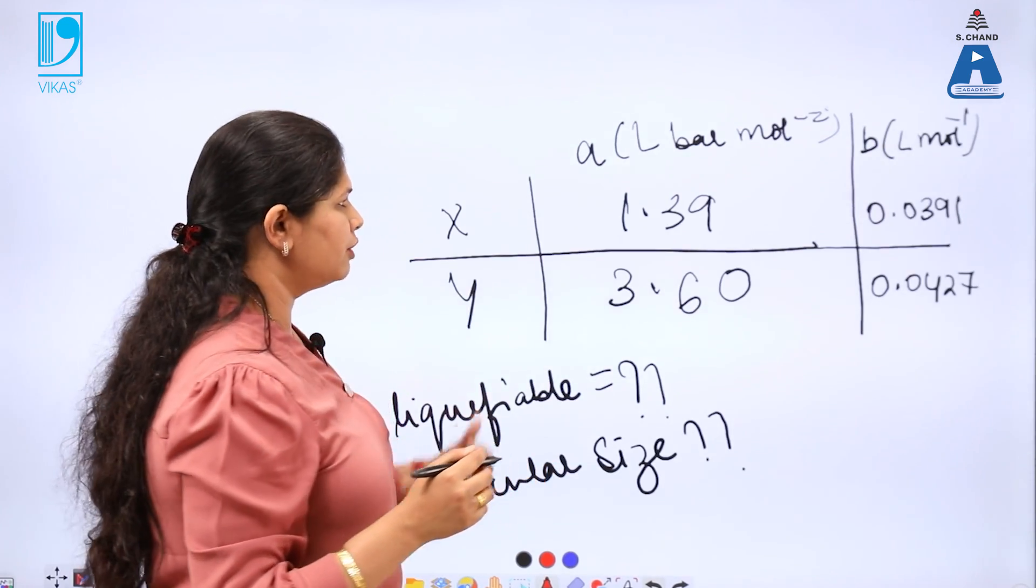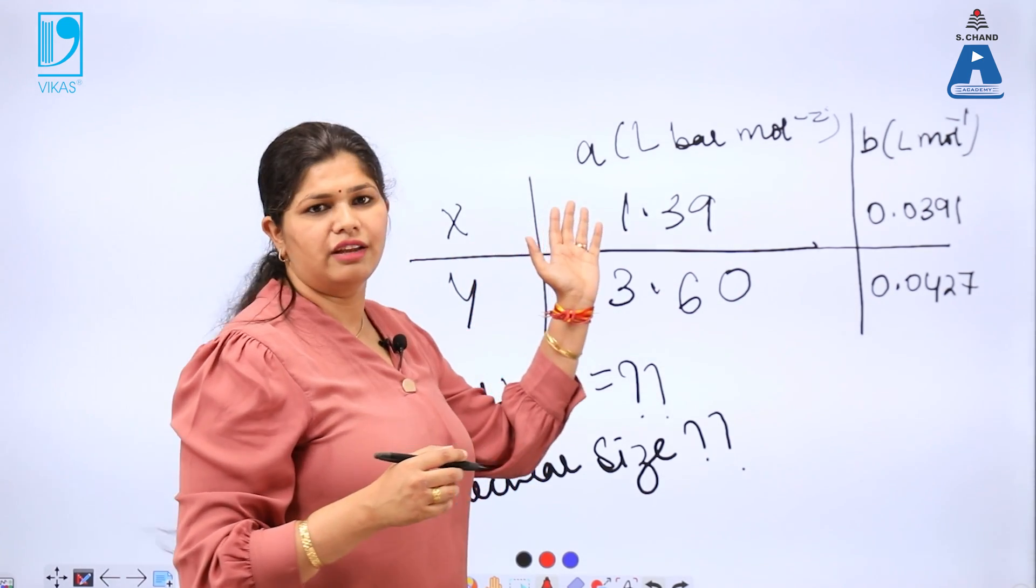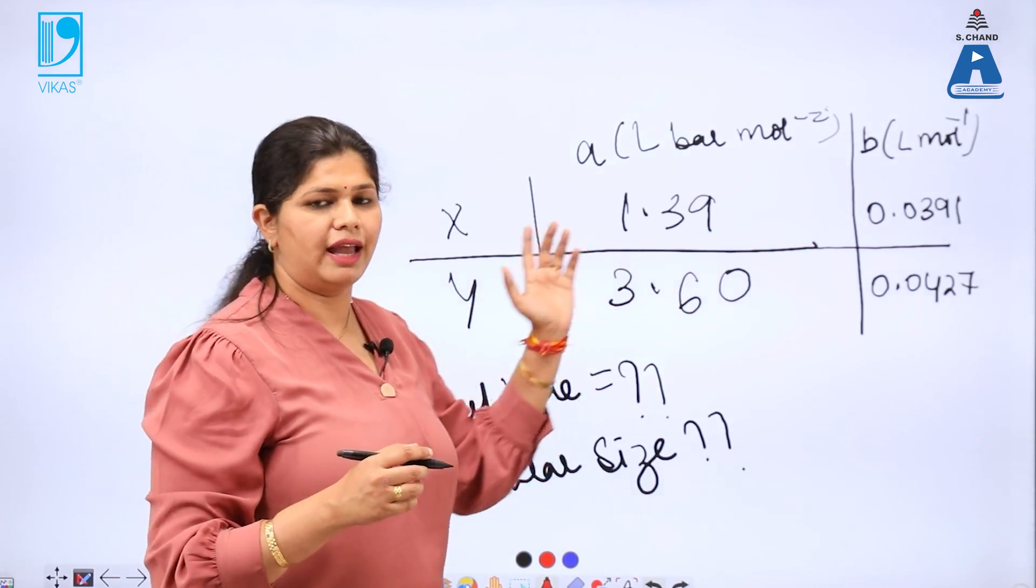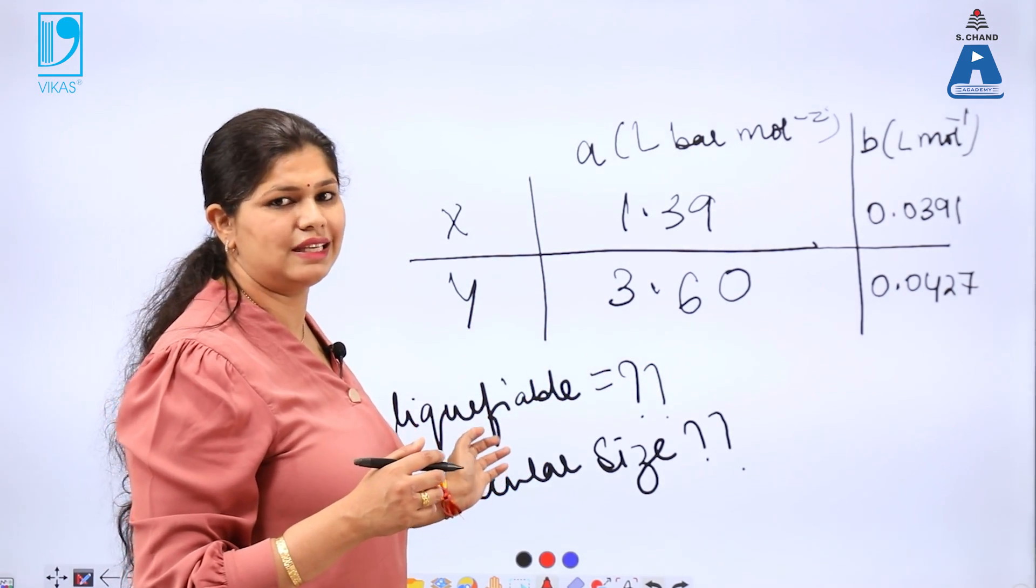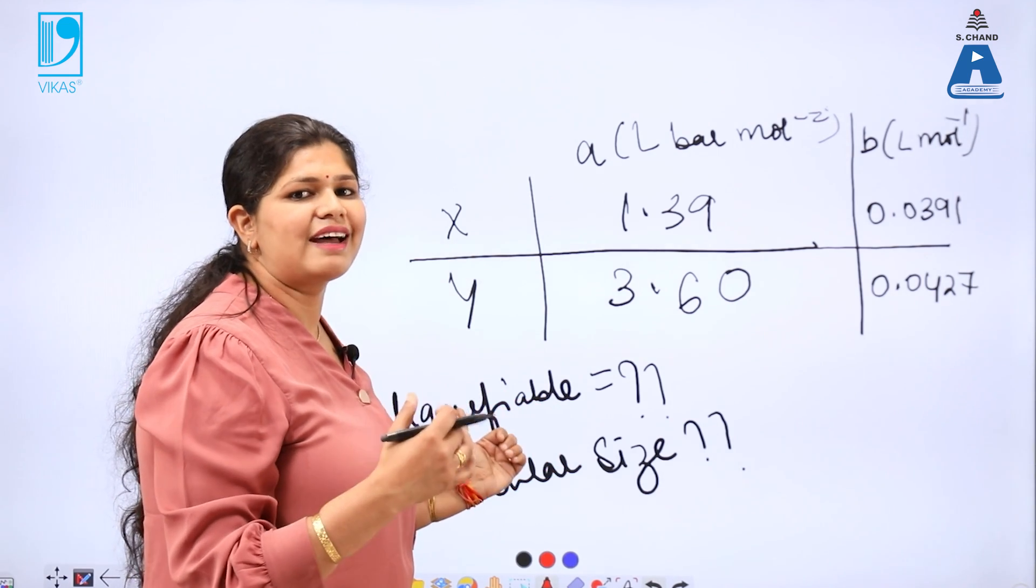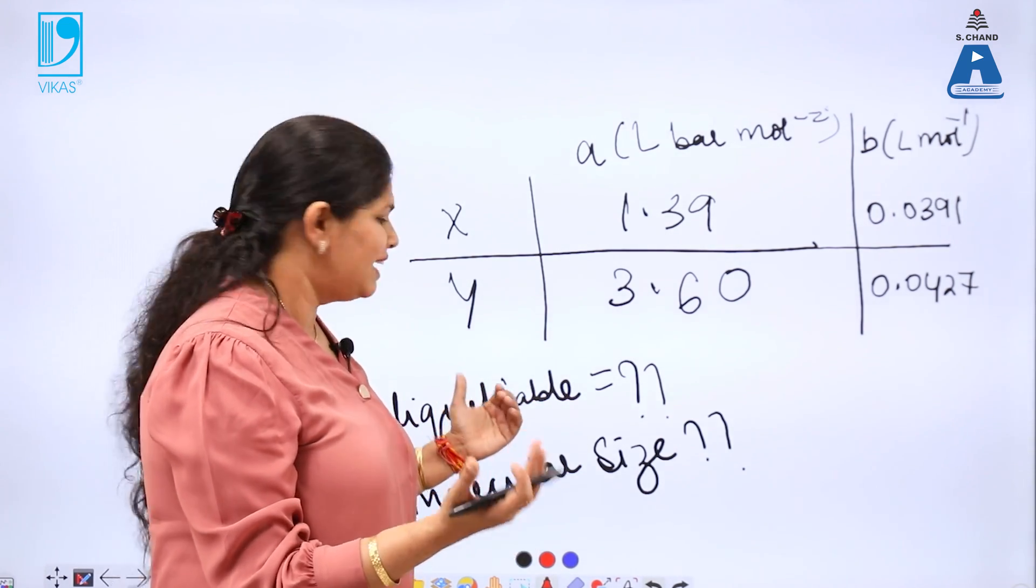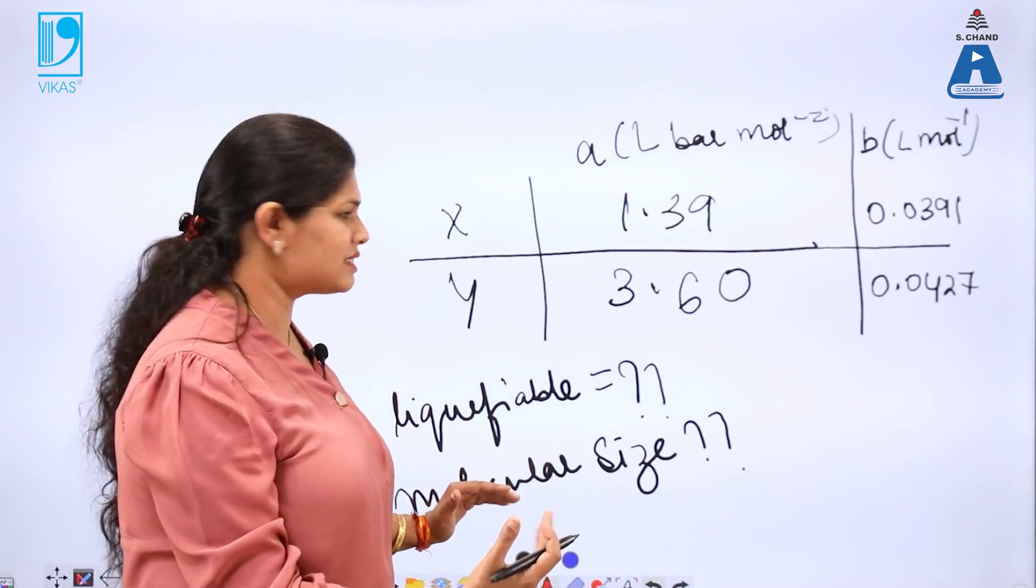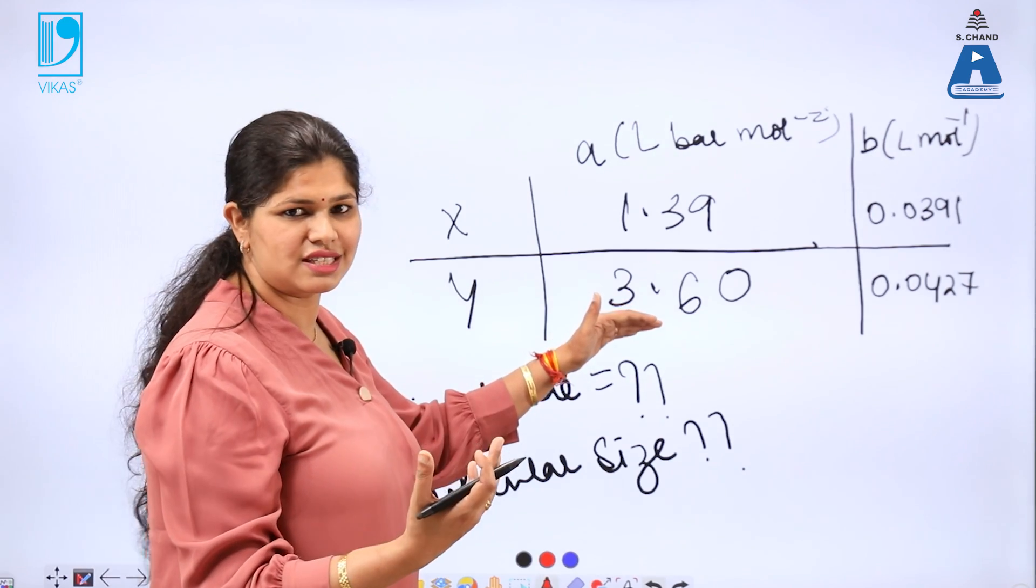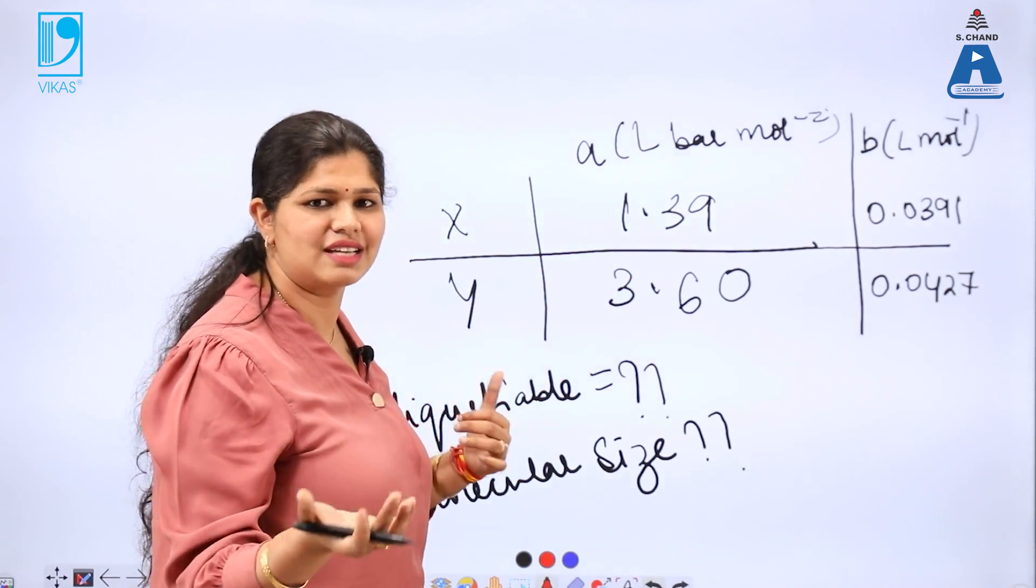Now, one question for all of you: if I have two gases and if I give you the value of A and B, which gas will be easily liquefiable? The gas which has higher value of A will be easily liquefiable and similarly which gas will have higher molecular size, the gaseous system where B is large will have higher molecular size.